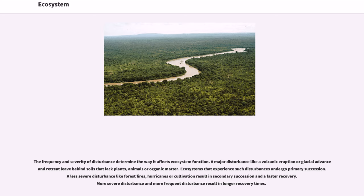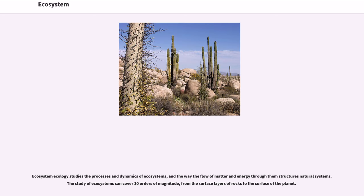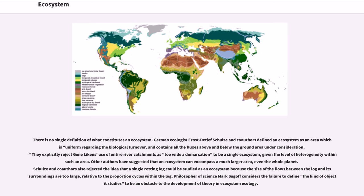Ecosystem ecology studies the processes and dynamics of ecosystems, and the way the flow of matter and energy through them structures natural systems. The study of ecosystems can cover 10 orders of magnitude, from the surface layers of rocks to the surface of the planet. There is no single definition of what constitutes an ecosystem.